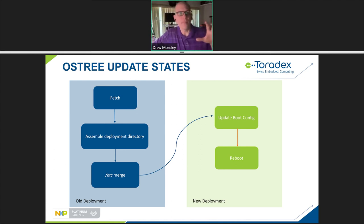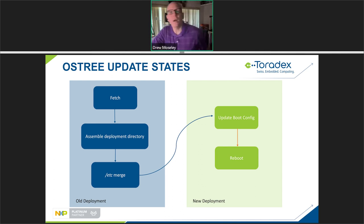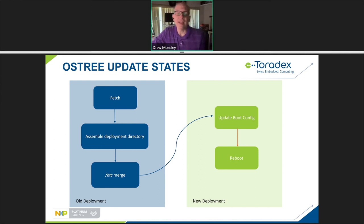Once everything is ready in the repository for the new version, we switch into the context of the new deployment and update the boot configuration — changing those U-Boot environment variables to say we're now using version 3 instead of version 2. Then we reboot. Every update through OSTree requires a reboot because you're actually changing the root file system. In Torizon, applications are stored in Docker, and the Docker runtime stores its data in slash var, so application updates can be done without a reboot.